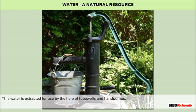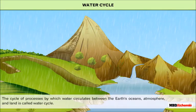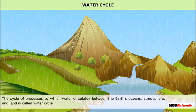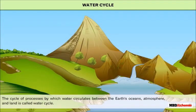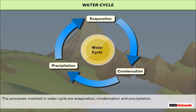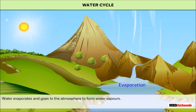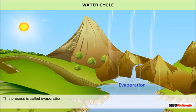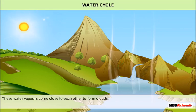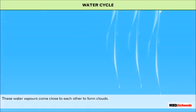The water cycle is the cycle of processes by which water circulates between the earth's oceans, atmosphere, and land. The processes involved in the water cycle are evaporation, condensation, and precipitation. Water evaporates and goes to the atmosphere to form water vapors — this process is called evaporation.